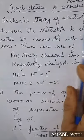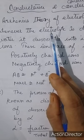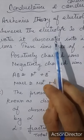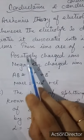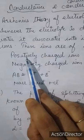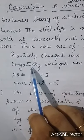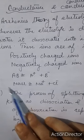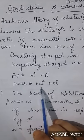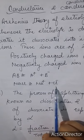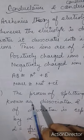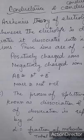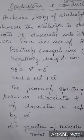Let us today talk about conductance and conductivity. Let us discuss Arrhenius's theory of electrolytic dissociation. Whenever an electrolyte is dissolved in water it will dissociate into two respective ions: the positively charged ion known as the cation and the negatively charged ion known as the anion. For example, NaCl when dissolved in water will dissociate into Na+ and Cl−. This process of splitting of ions is known as dissociation, and the degree of dissociation is represented by alpha.